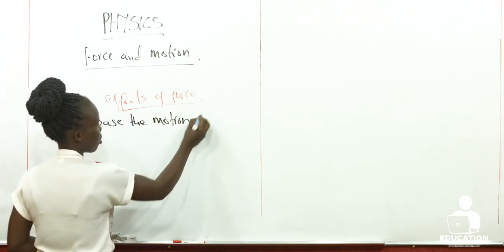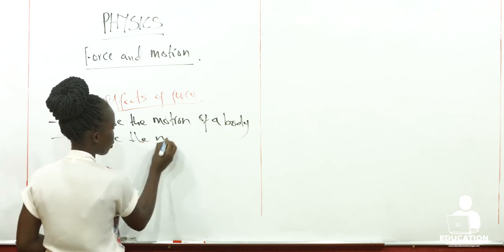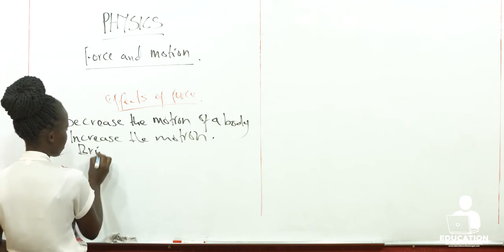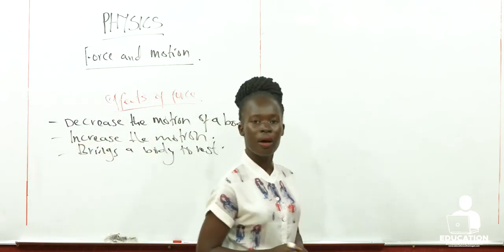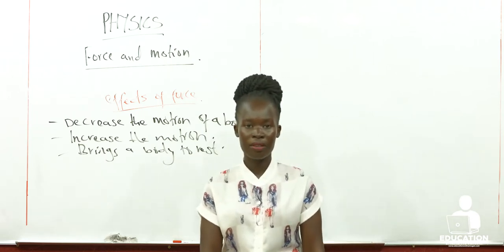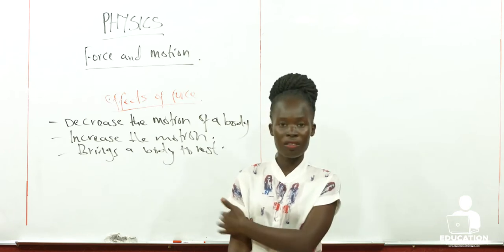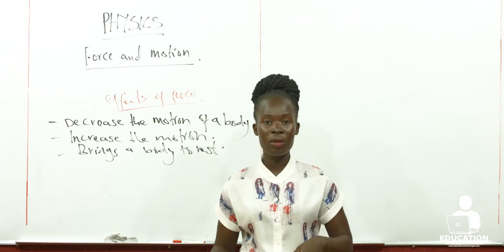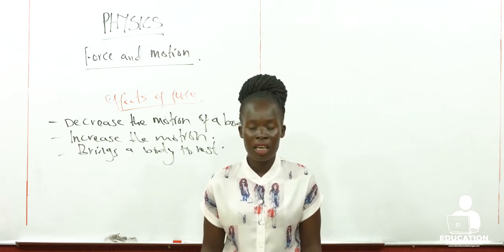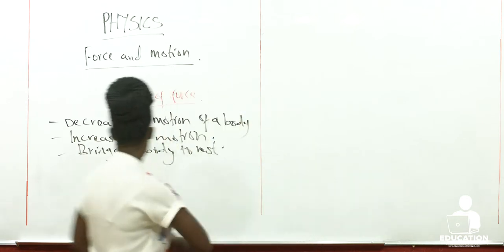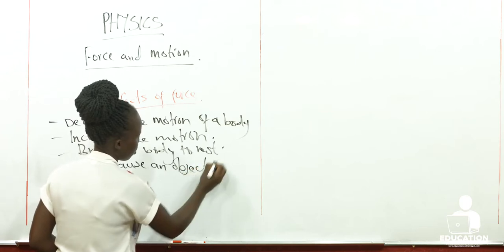So we already have three effects: force can decrease the motion of the body, it can increase the motion, or it can bring a body to rest. What if the body is just at rest? If you apply a force on it — say on this side — it can push me like this. If the force is large enough, you are displaced instead of remaining in the same position. That means force can cause an object to start moving — so we have another effect here.